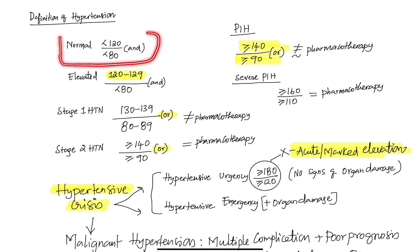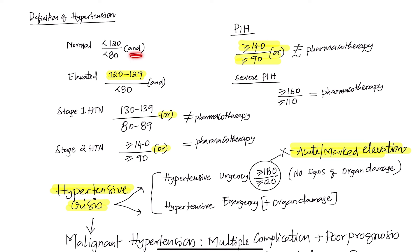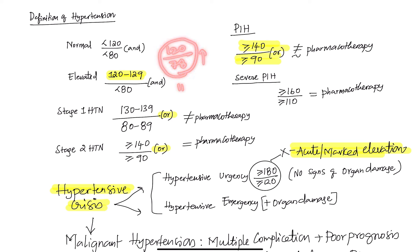Normal BP is less than 120 systolic AND less than 80 diastolic — units are mmHg. The AND and OR are very important and I would like to see them in your answers. Normal BP must be less than 120 AND less than 80. Even if it is 120 by 78, it is elevated — the number should be 119 or less. You have to be very careful whether it is less than 120 or less than or equal to 120; this subtle variation is very important.